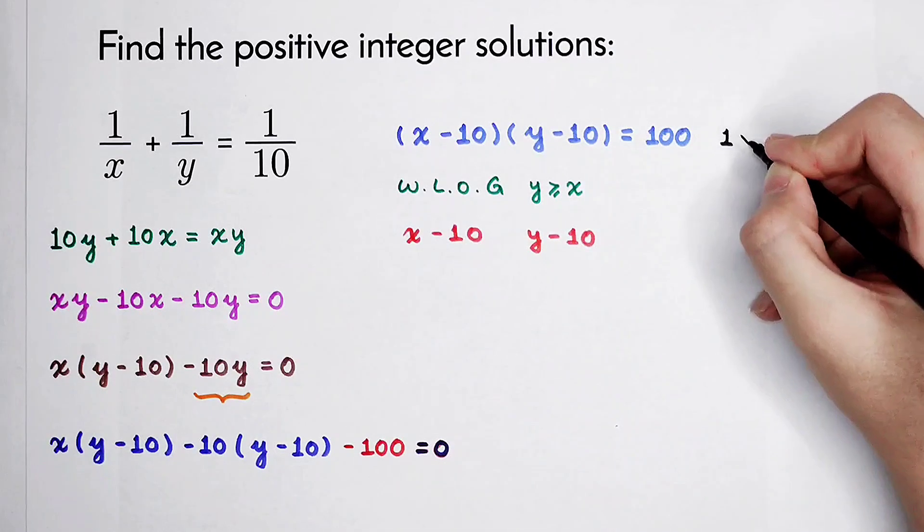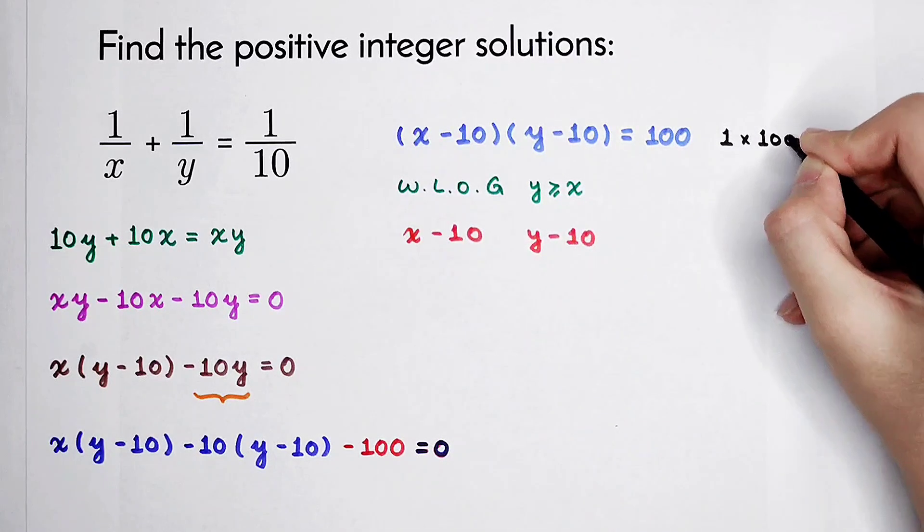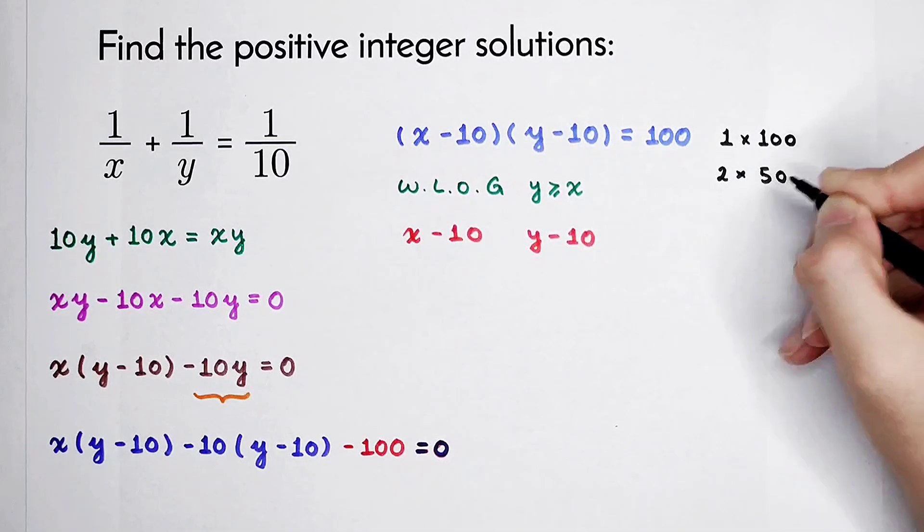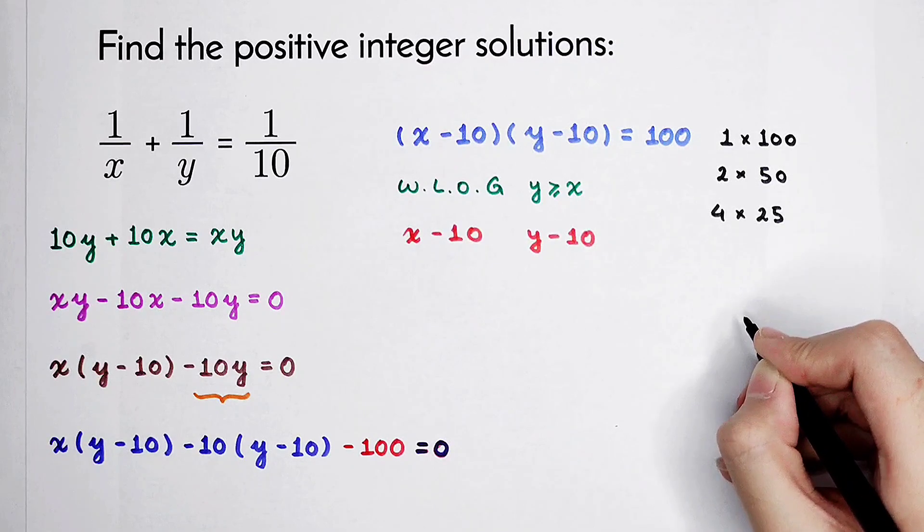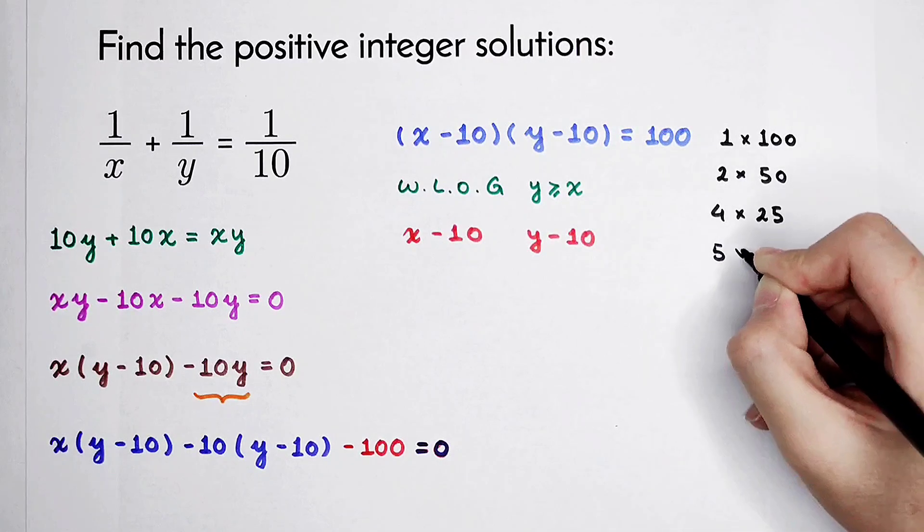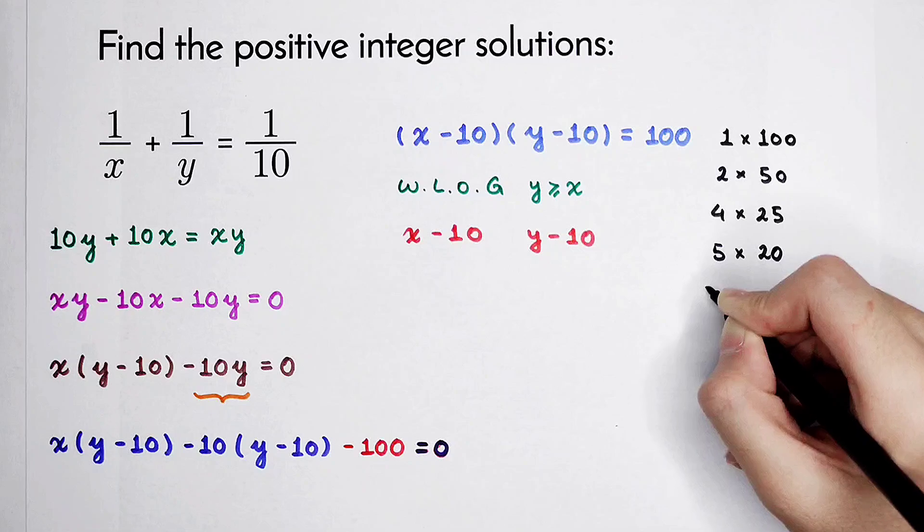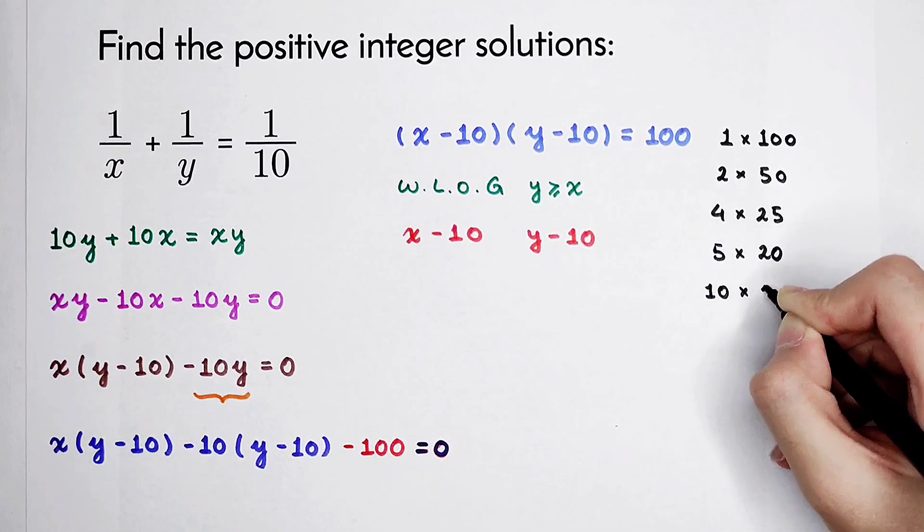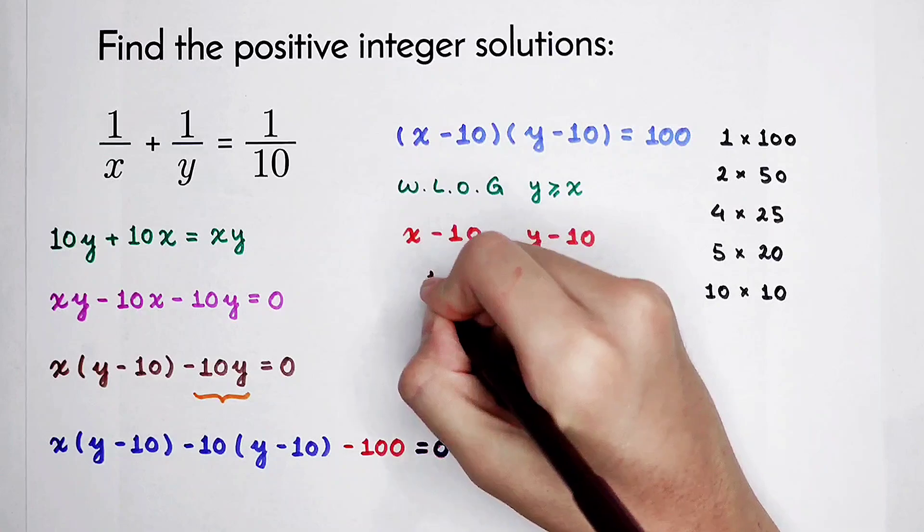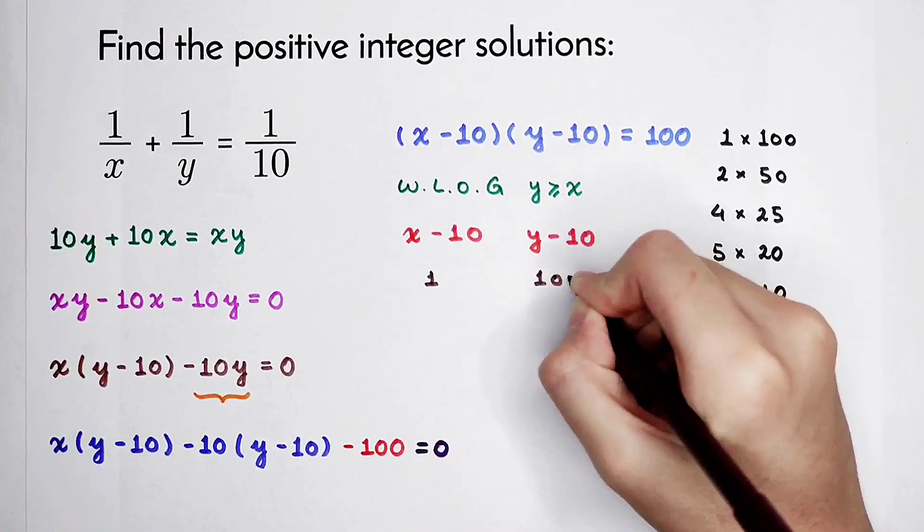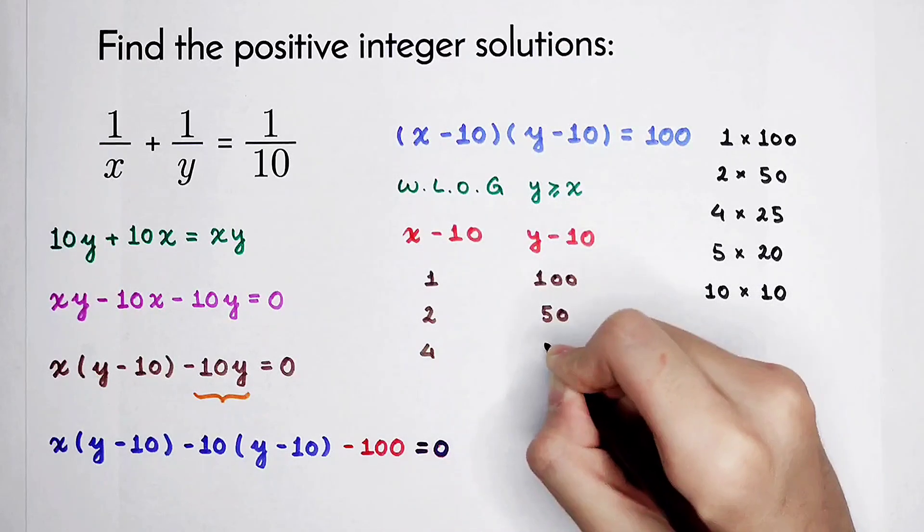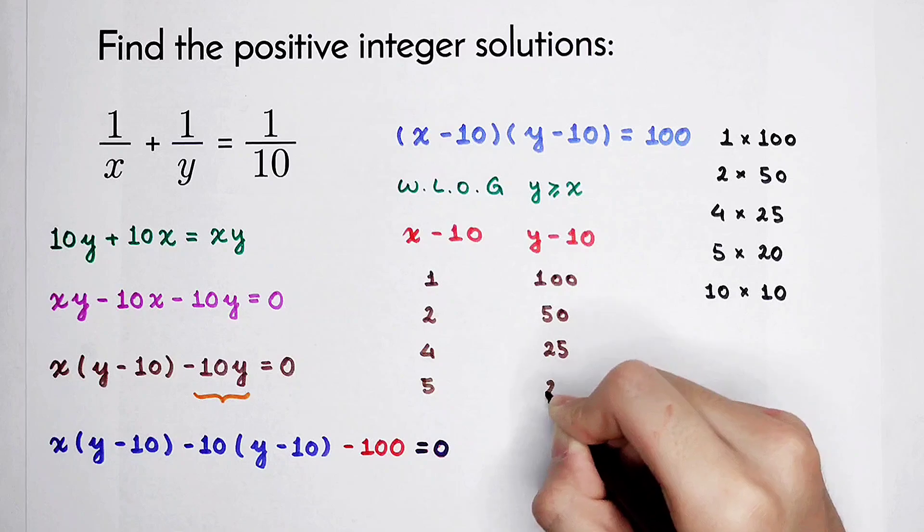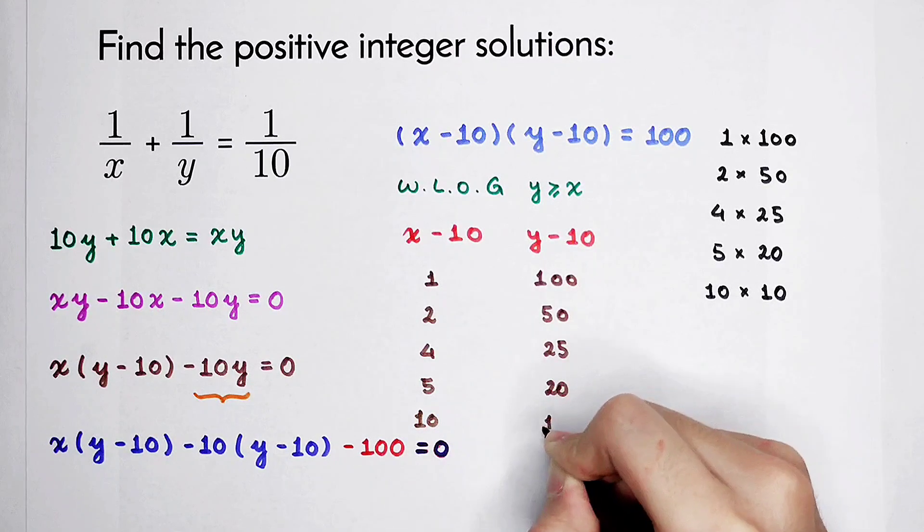100 is 1 times 100, 2 times 50, 4 times 25. And it can also be written as 5 times 20 and 10 times 10. So here: 1, 100; 2, 50; 4, 25; 5, 20; and 10, 10.